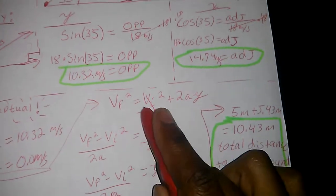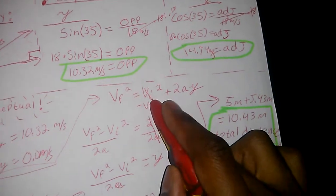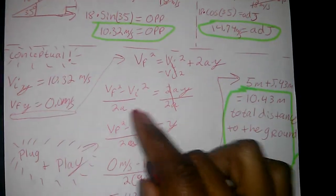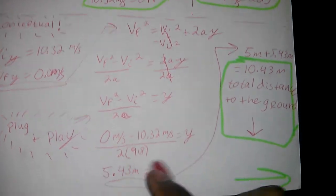Conceptual. So now you go ahead and you have this. V final, V initial, 2AY. Go ahead and solve for Y. Bada bing, bada boom.